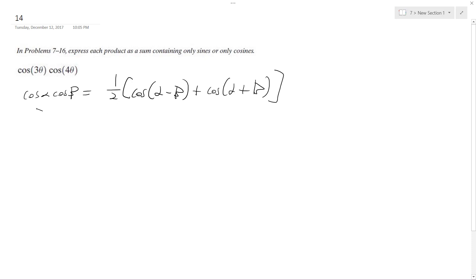So my alpha will be 3 theta, and my beta will be 4 theta. So we'll get 1/2 of cosine 3 theta minus 4 theta, plus 3 theta plus 4 theta.